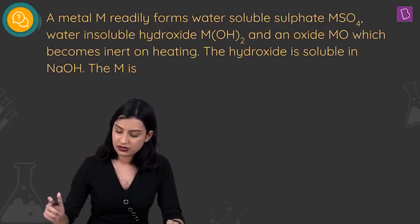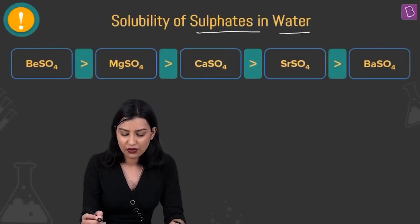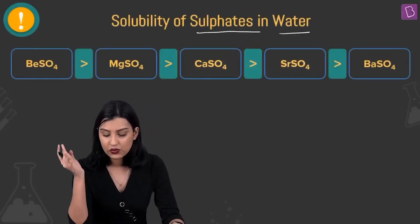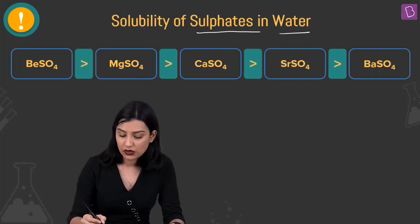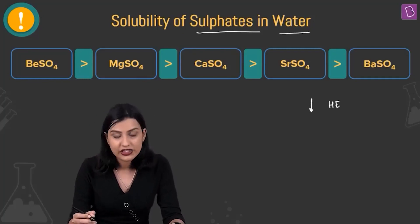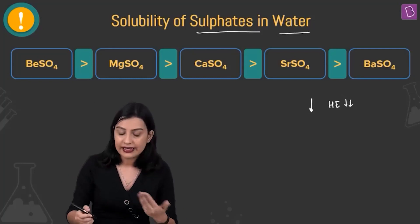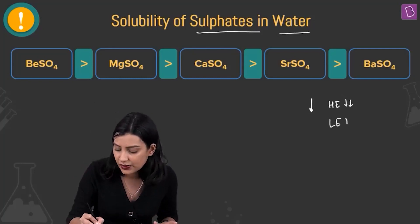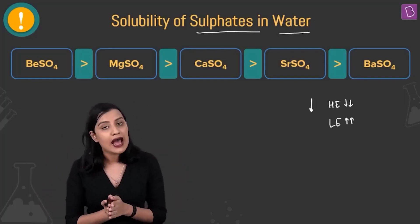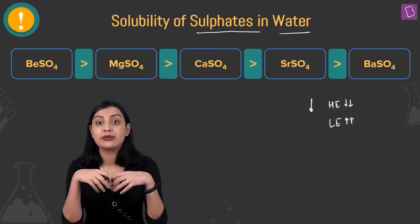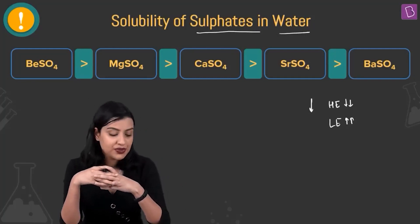Let's talk about the solubility of sulfates in water. As you go down the group, the solubility of sulfates decreases because the hydration enthalpy of these ions decreases while the lattice enthalpy increases. The lattice becomes progressively more stable, and the energy liberated due to hydration becomes less as charge density decreases going down the group.